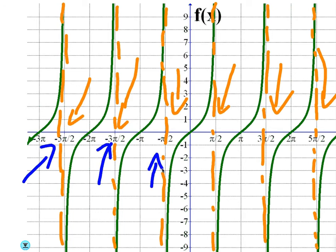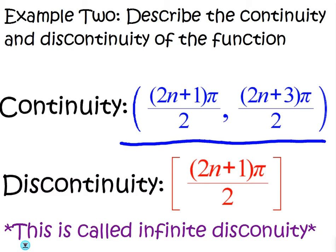So at x equals negative five pi over two, negative three pi over two, negative pi over two, go ahead and do that. Or you can just write this general formula, which covers all of those pi over twos.